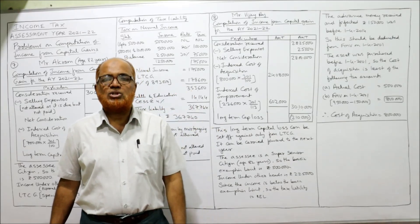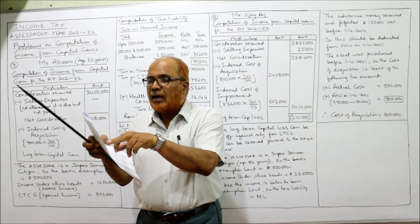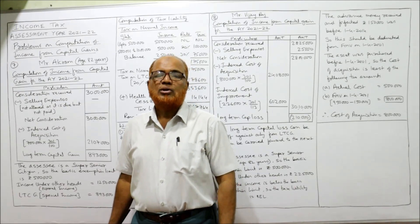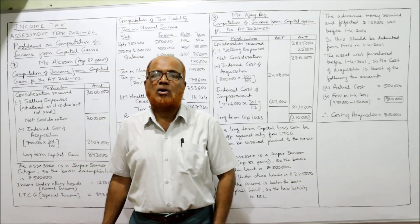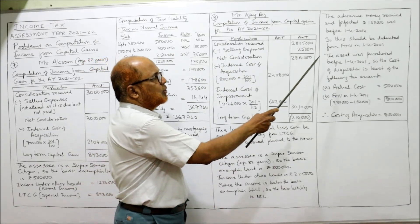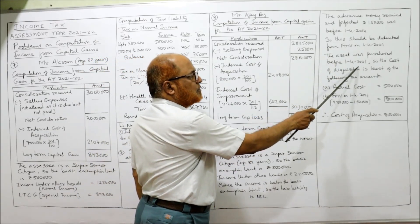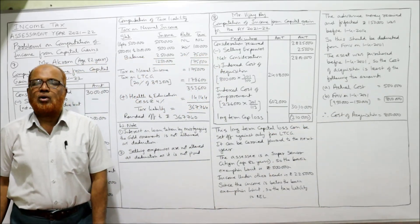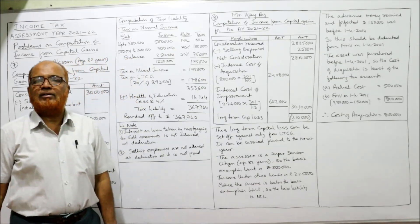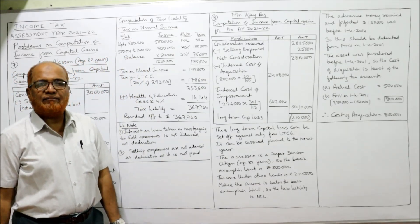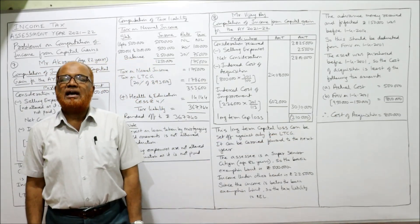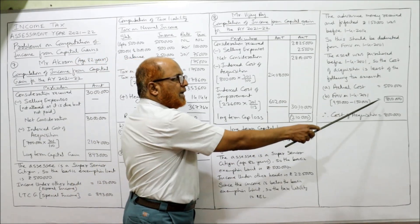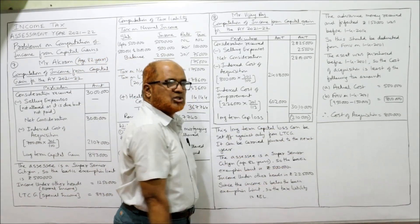So 1 lakh 50 thousand will be deducted from the cost of acquisition. The cost of acquisition here is FMV on 1/4/2001 of 9 lakh 50 thousand. So 9 lakh 50 thousand minus 1 lakh 50 thousand = 8 lakh rupees is the revised cost of acquisition. The asset was purchased before 1/4/2001, so we chose the higher of actual cost (5 lakh) or FMV (9 lakh 50 thousand), and then deducted the forfeited advance to arrive at 8 lakh.